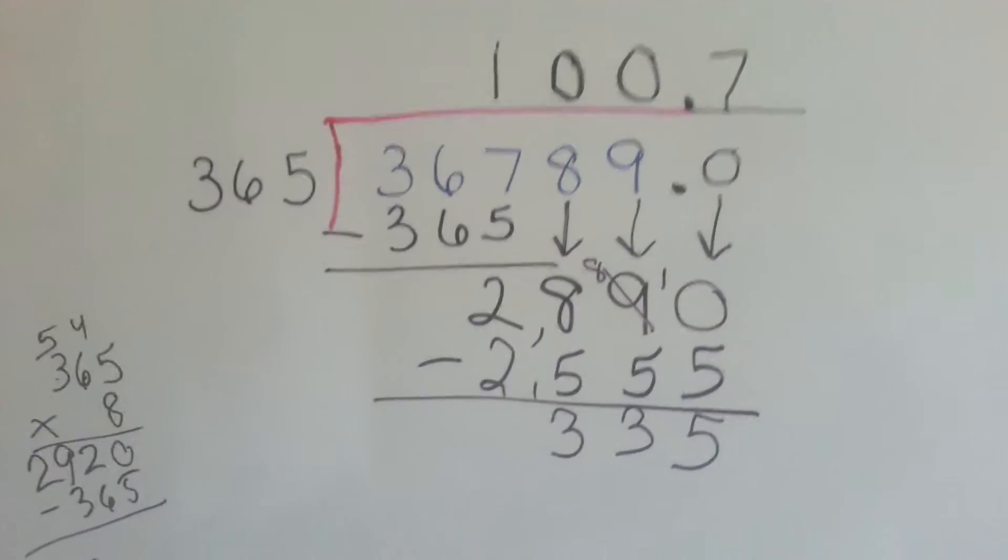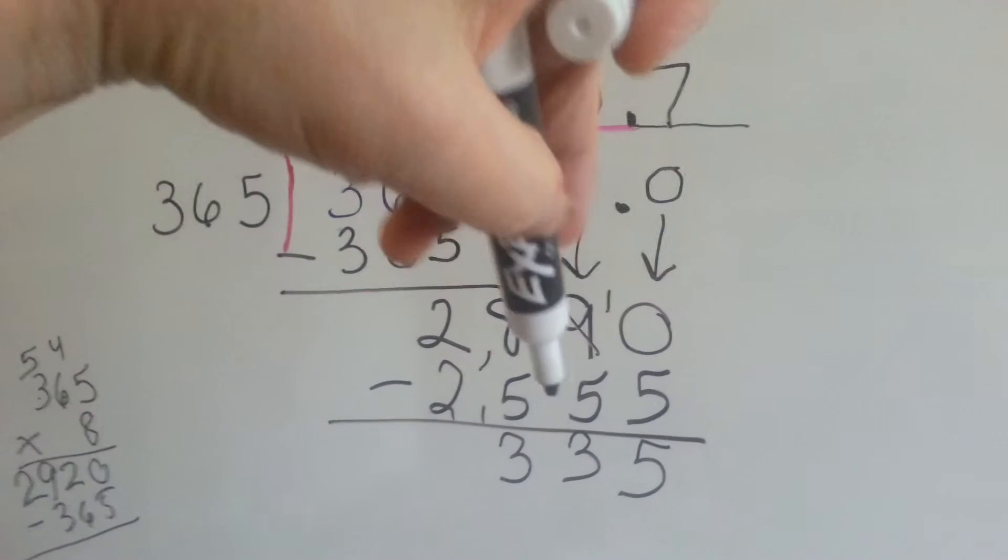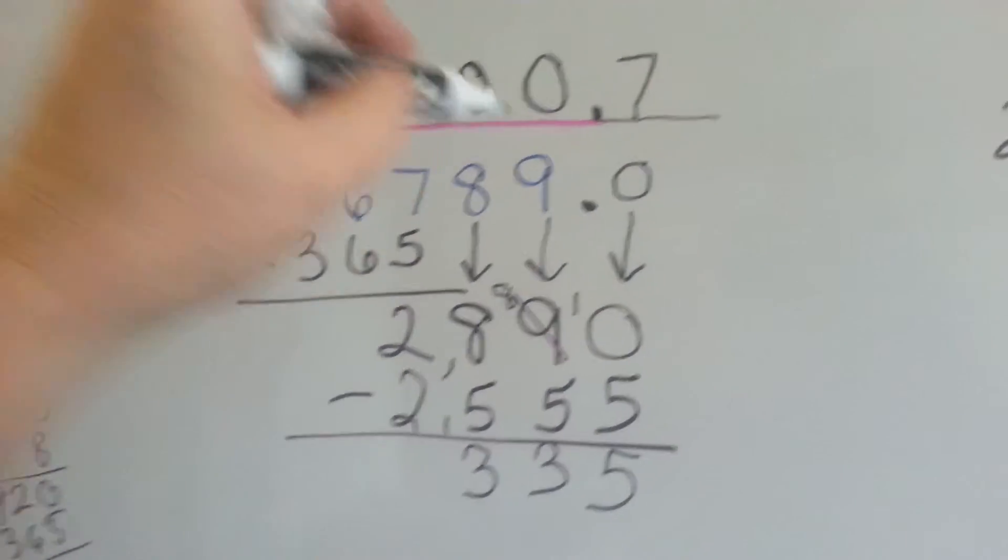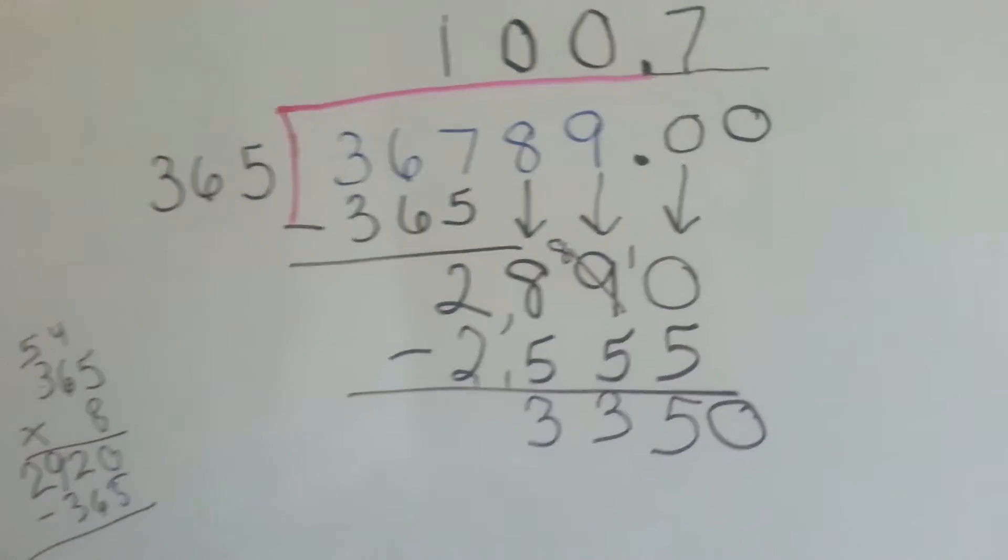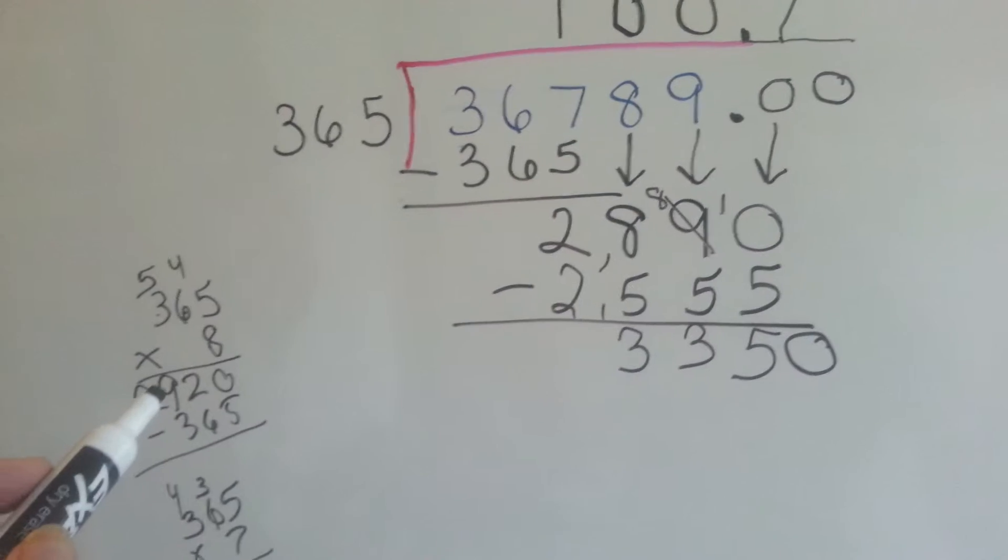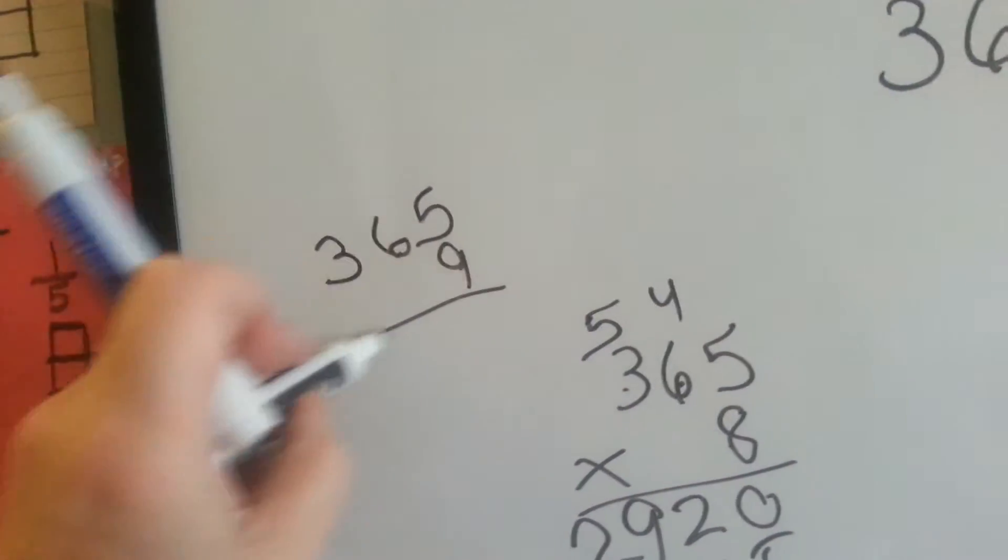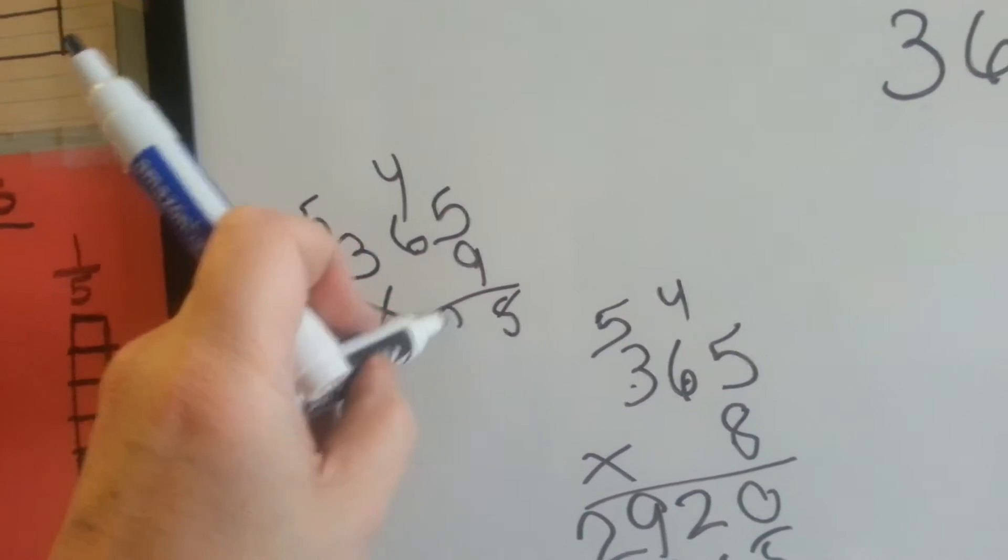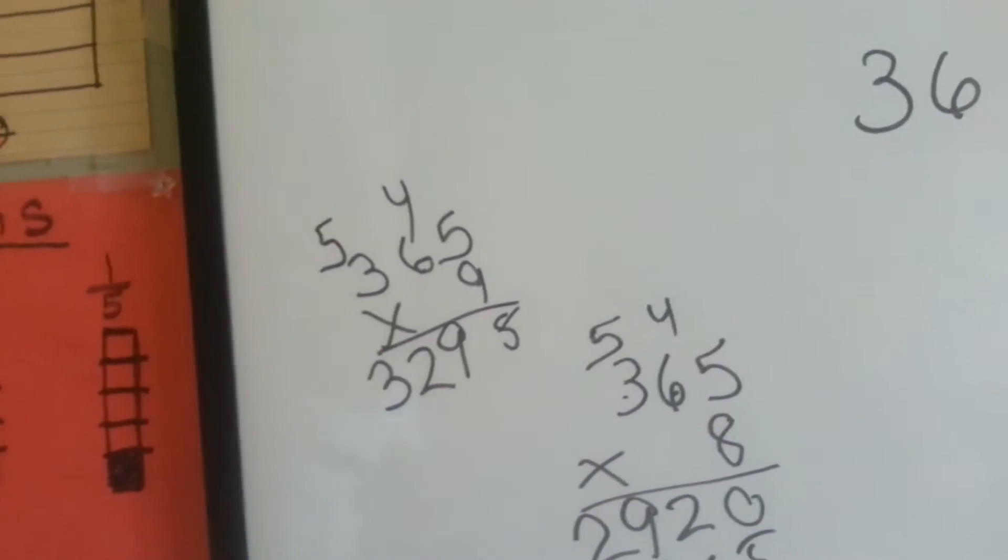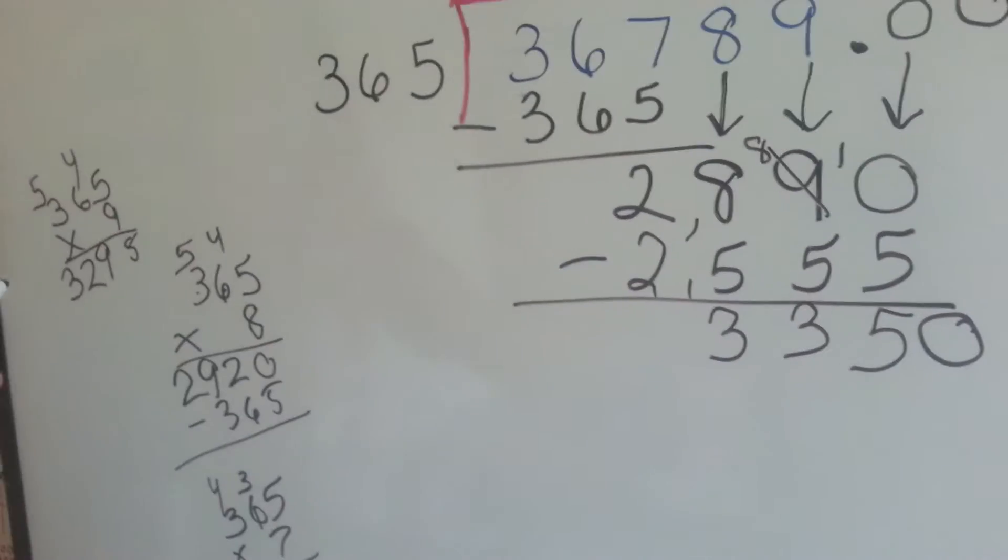So now if we want to, we can add another 0, or we can say our problem is 100.7 and 335 over 365 as a fraction. That's the numerator, that's the denominator. But we can also add another 0 and keep going into decimals. How many times can this fit into this? Well, we know 29, 20 was 8 times. What's 9 times? Let's see what happens if we try it by 9. That's 45, 54, 59. It helps if you know your multiplication tables real well. That's 27 and 5 is 32. That will fit. 9 is 3295. So we could put a 9 here.